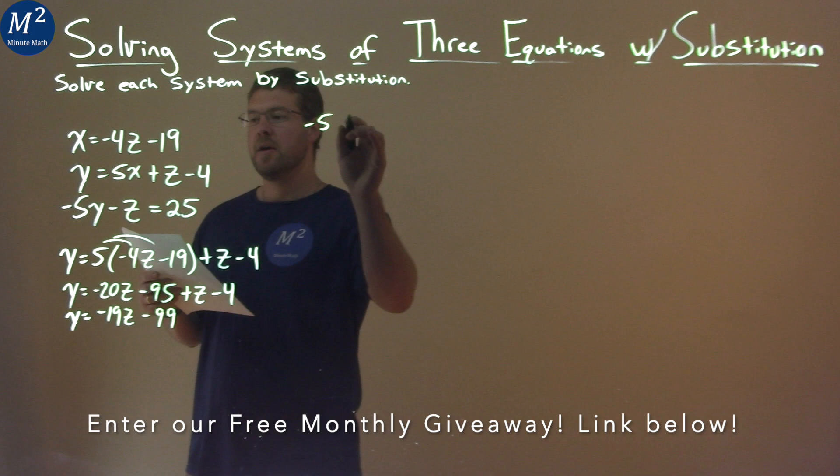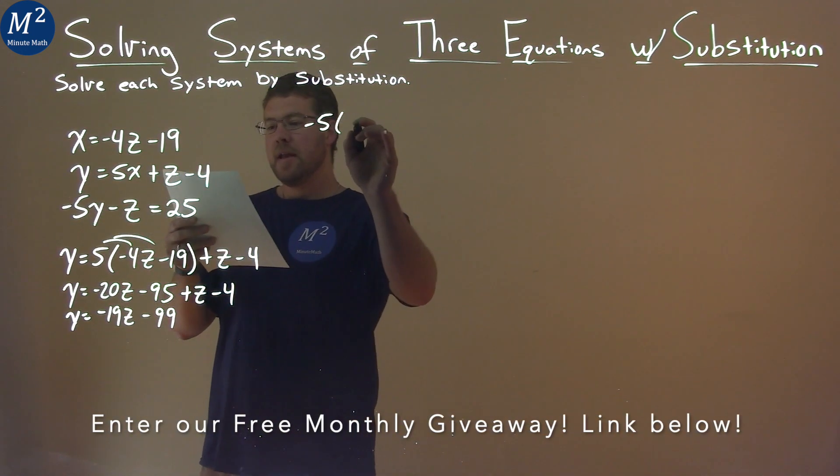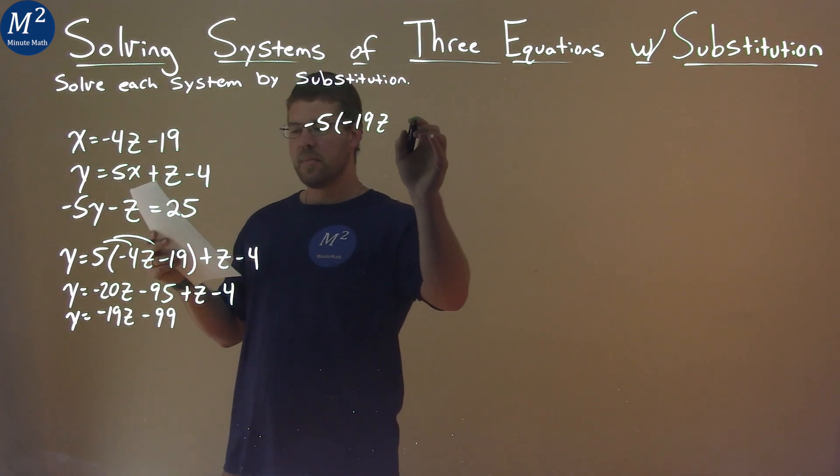So we have negative 5 here. And instead of y, I'm putting this whole equation we just found: negative 19z minus 99.